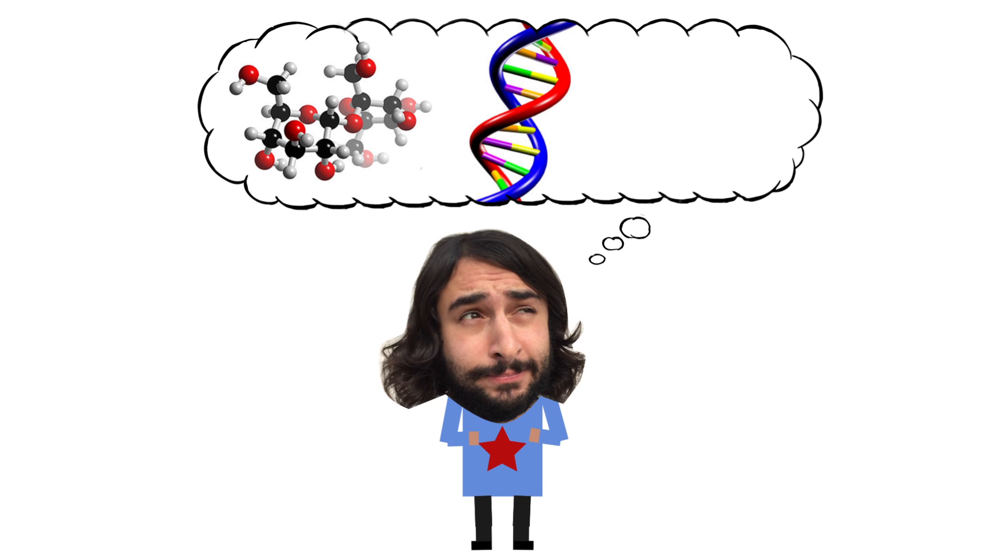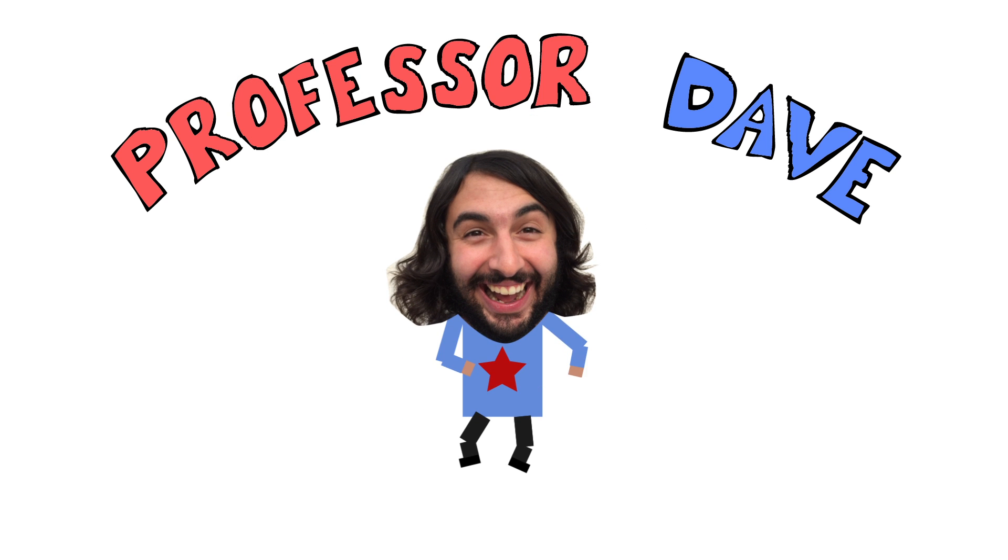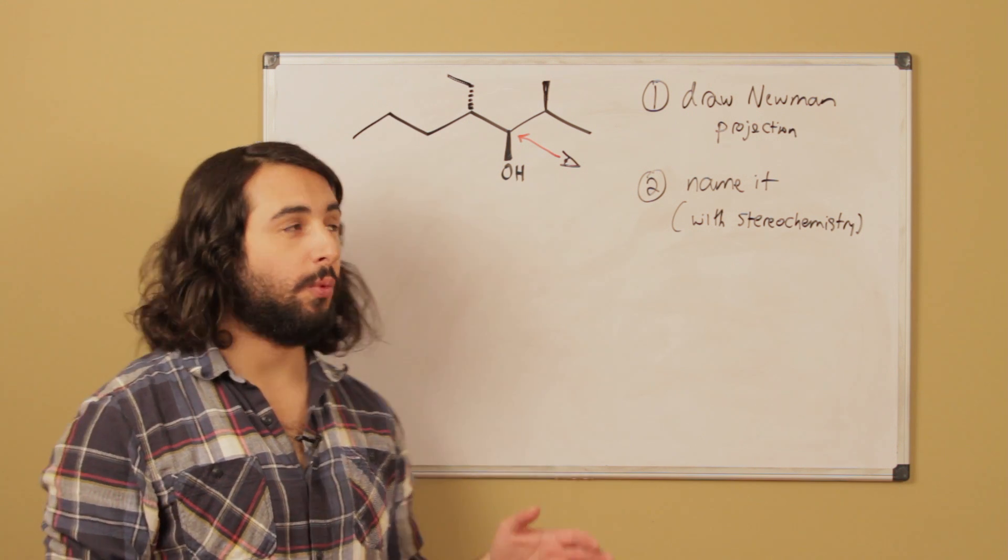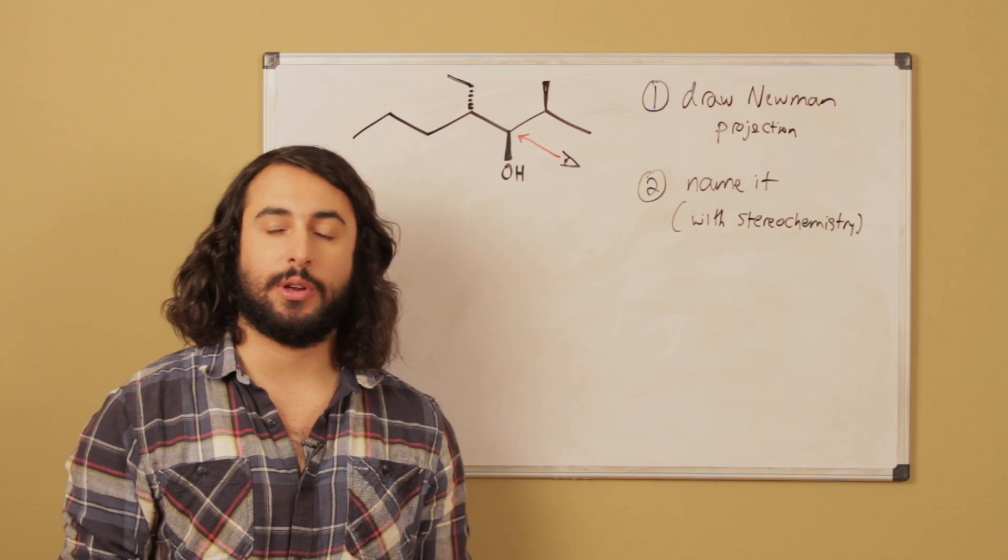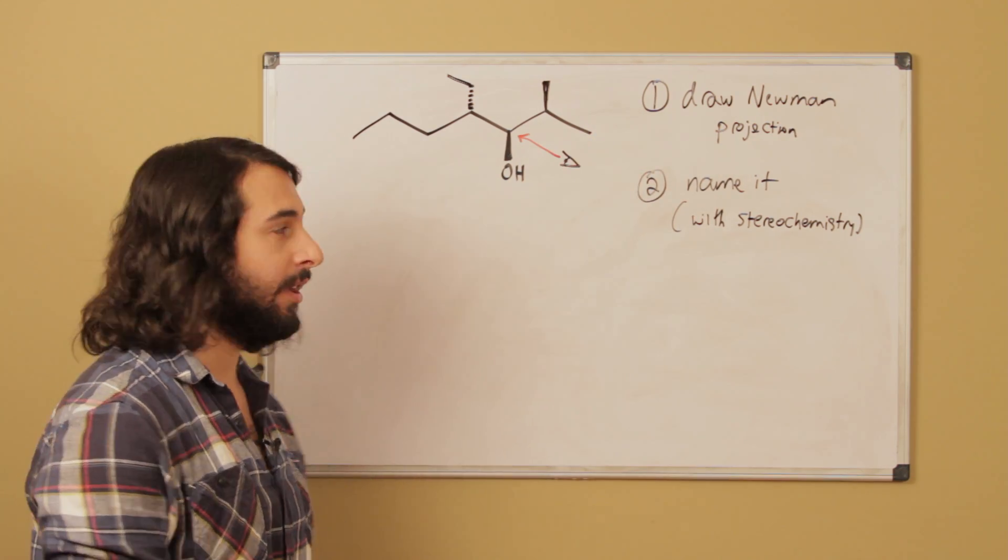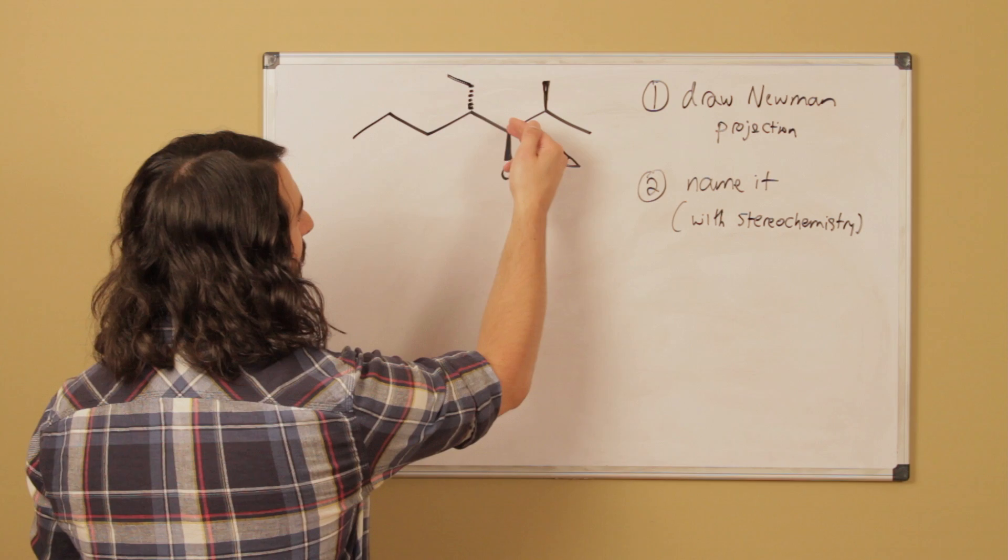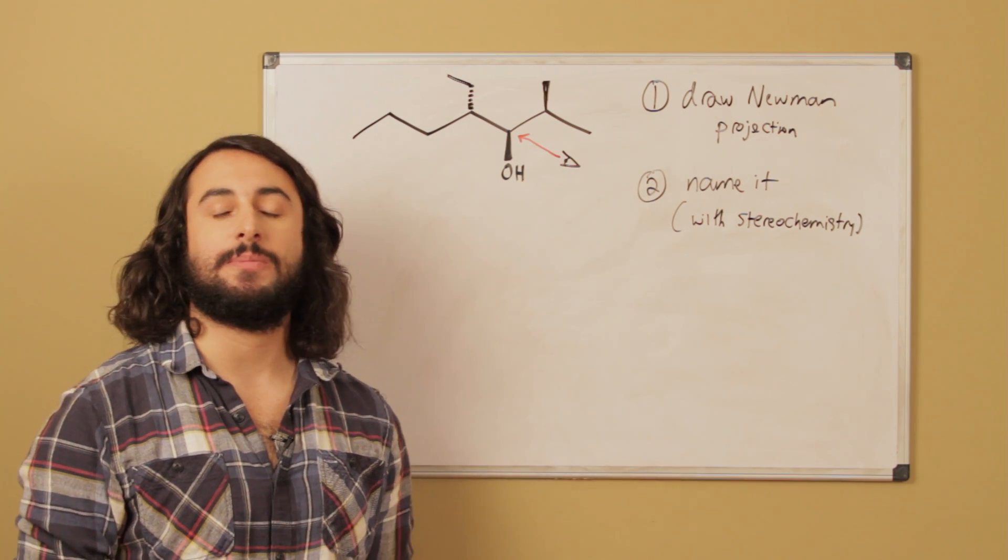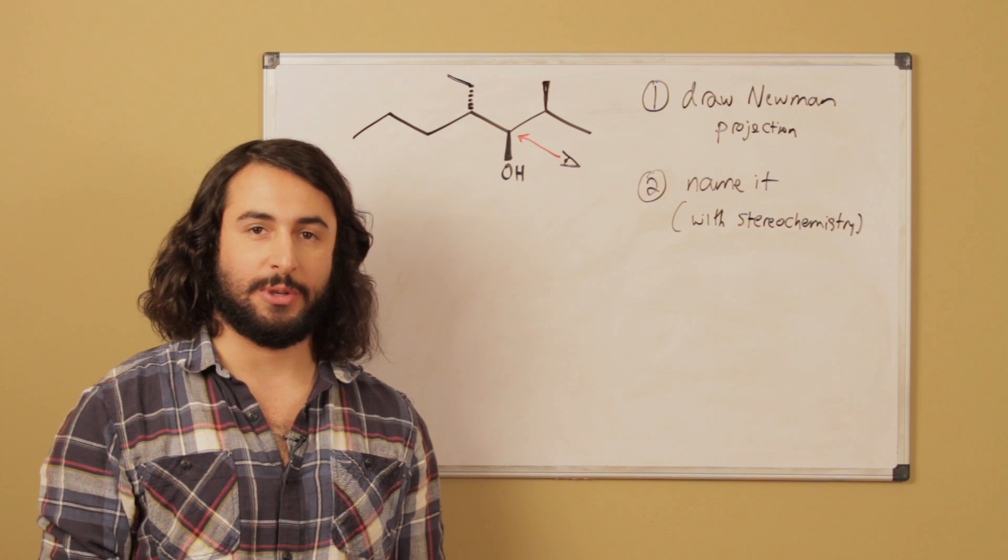He knows a lot about the science stuff, Professor Dave Explains. Okay guys, for today's problem we have a compound here and we're going to want to do two things. Number one, we want to be able to draw the Newman projection of going down this bond in this direction here as is marked, and number two, we want to be able to name this molecule including stereochemistry.